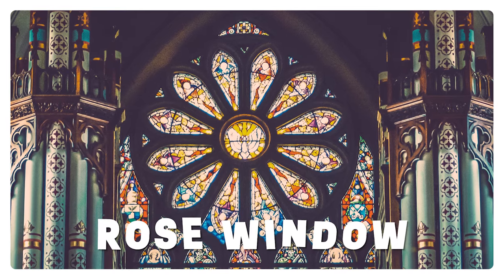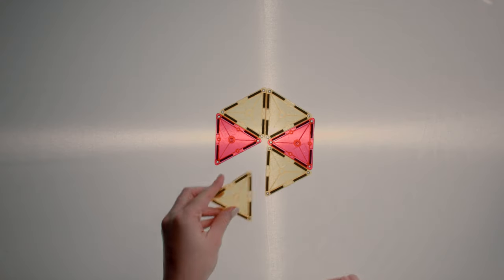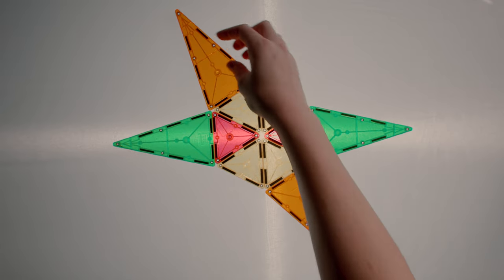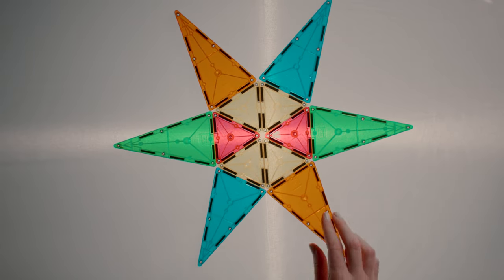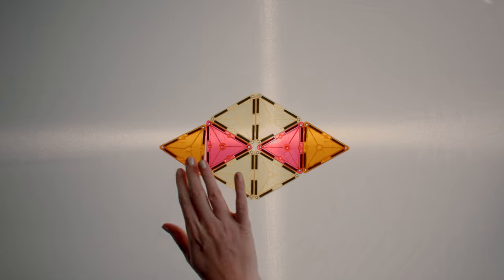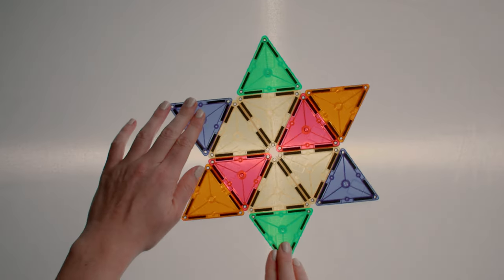One important stained glass window is the rose window. The rose window is usually at the front of the church above the altar and it's made out of small windows that make up one big circle window. Sometimes it looks like it has flower petals. I guess that's why it's called a rose window.